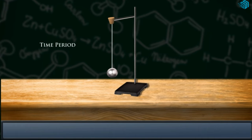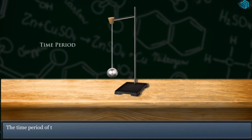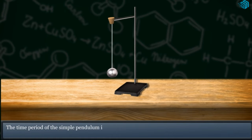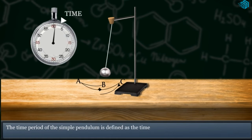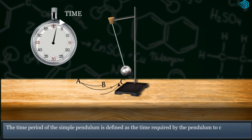Time Period: The time period of a simple pendulum is defined as the time required by the pendulum to complete one oscillation.